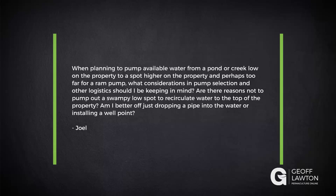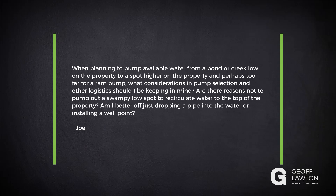Joel has a question: when planning to pump available water from a pond or a creek low on the property to a spot high on the property, perhaps too far for a ram pump, what considerations in pump selection and other logistics should I be keeping in mind? Are there reasons not to pump out of a swampy low spot to reticulate water to the top of the property? Am I better off just dropping a pipe into the water or installing a well point?